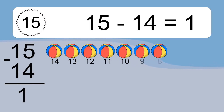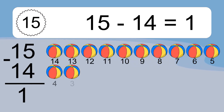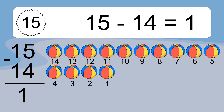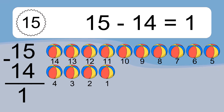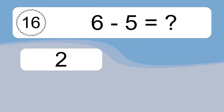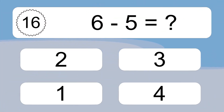15 minus 14 equals what? 15 minus 14 equals 1. Let's count it: 14, 13, 12, 11, 10, 9, 8, 7, 6, 5, 4, 3, 2, 1.